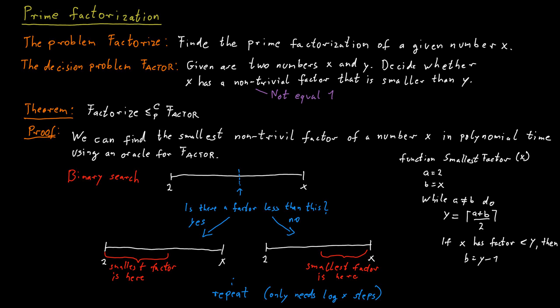And otherwise, we adjust the left end of the interval and make it larger to be equal to the middle. And in the end, the interval will only contain a single element and we will just return that element, which will be the smallest factor of x. So we can quickly find the smallest factor of a number x if we have access to this oracle for factor.